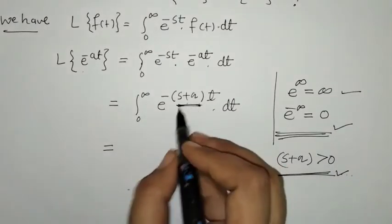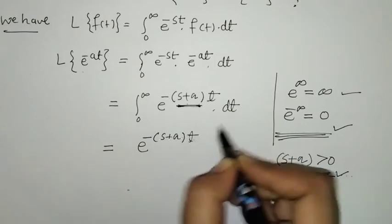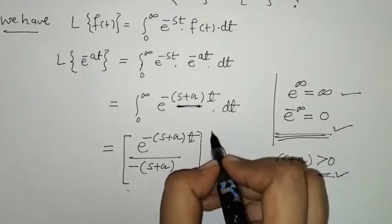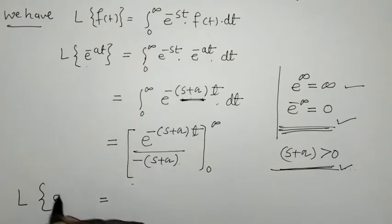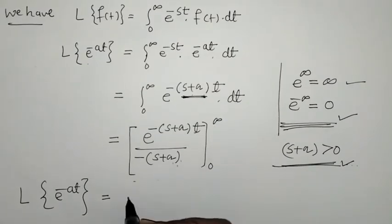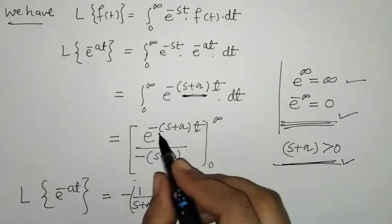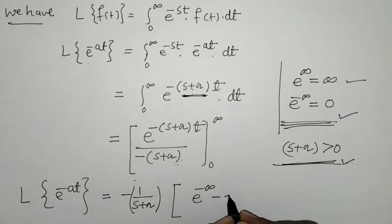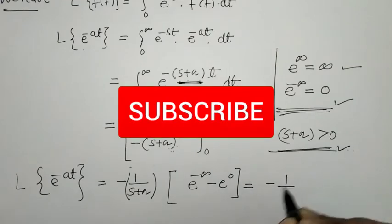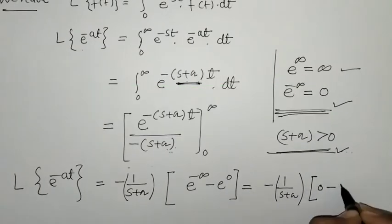Now we find the integration. The integral of e raised to minus of s plus a, with respect to t, gives us a denominator of s plus a. We put the limits t equals 0 to infinity. The constant term can be taken outside. We have e raised to minus infinity, which equals 0, and e raised to 0, which equals 1.